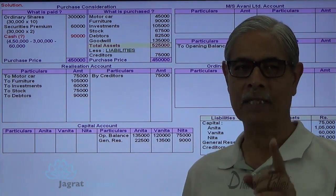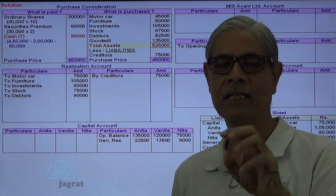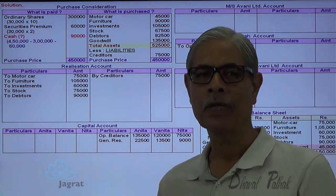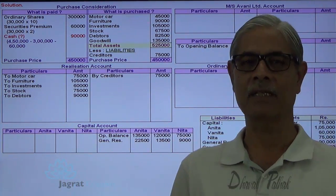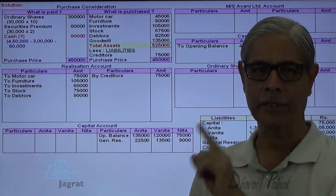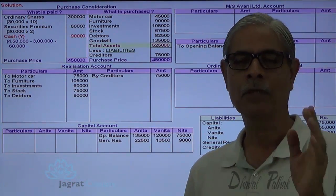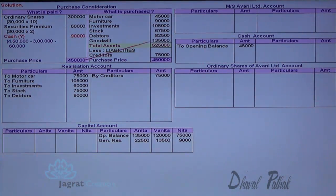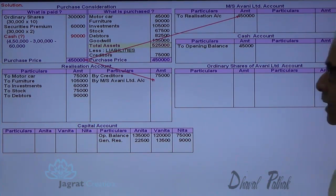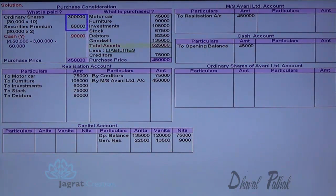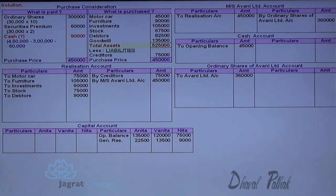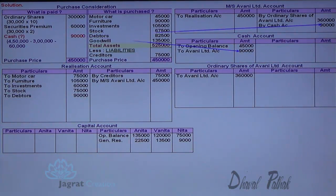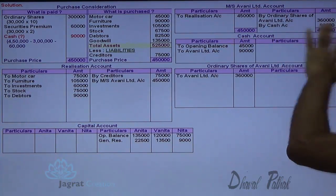The assets and liabilities are sold at an exchange value of 4,50,000. The company is the receiver, so debit the company's account and credit realization account. For purchase consideration, remember three steps: write the entry for purchase consideration due — Avni Limited account debit to realization account credit for 4,50,000; write the entry for purchase consideration received — shares of Avni Limited account debit and cash account debit, with Avni Limited account credited for shares 3,60,000 and cash 90,000.